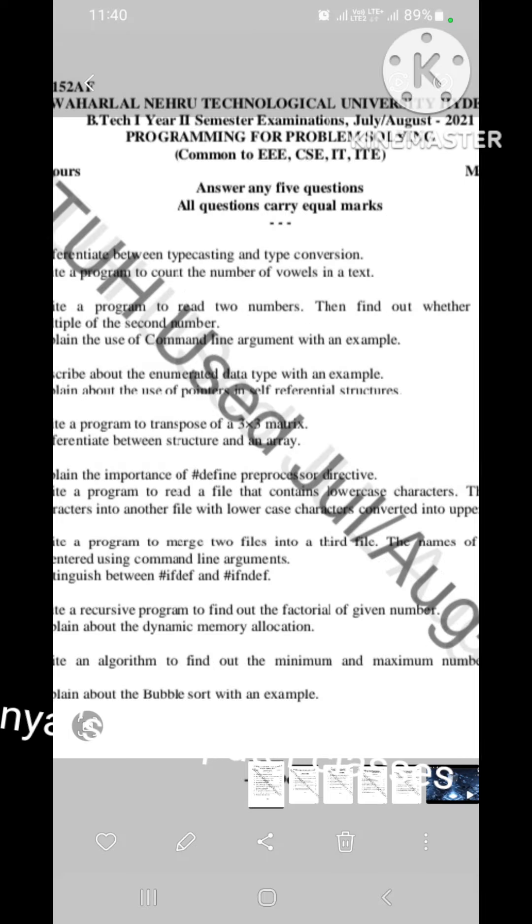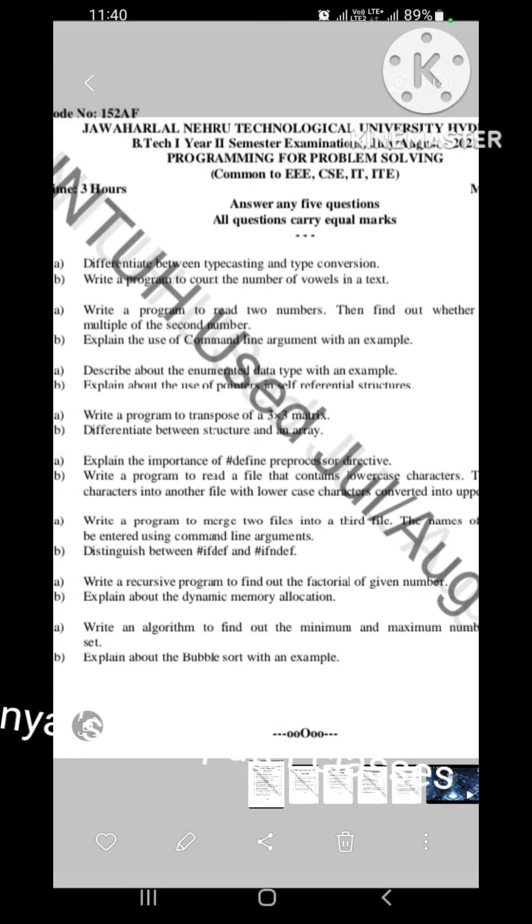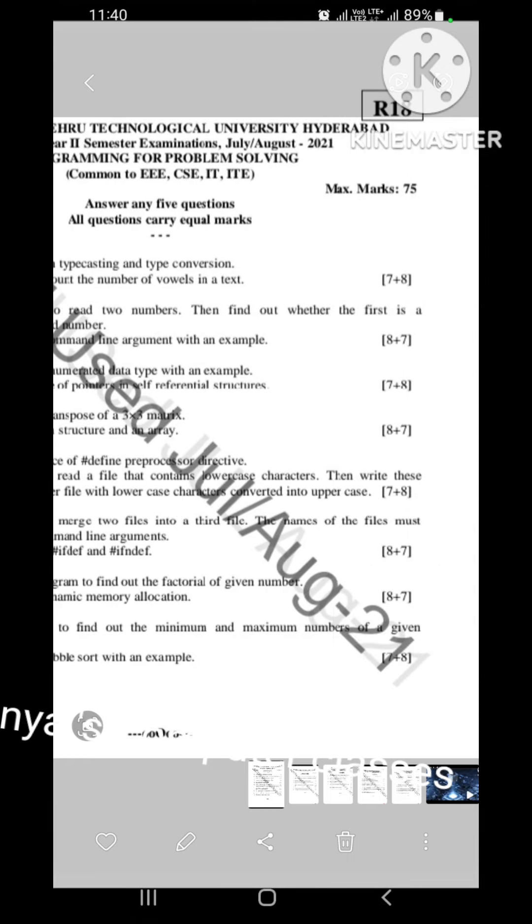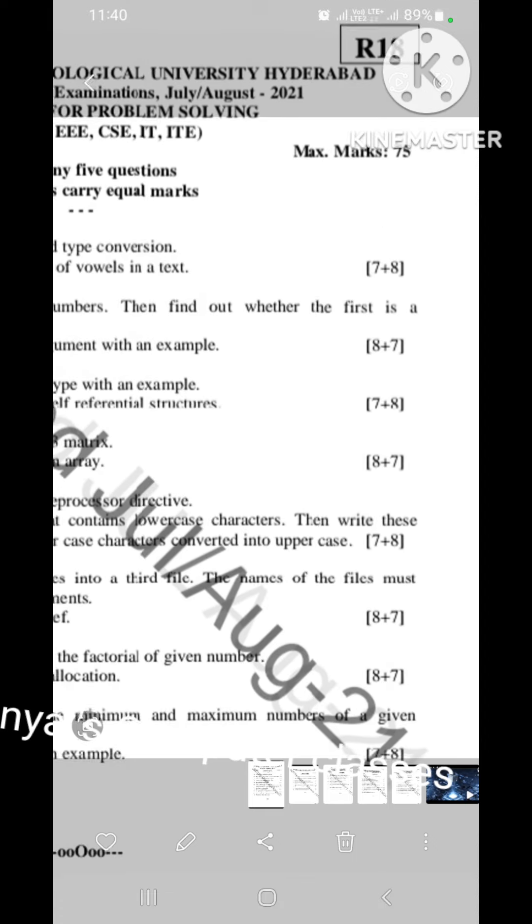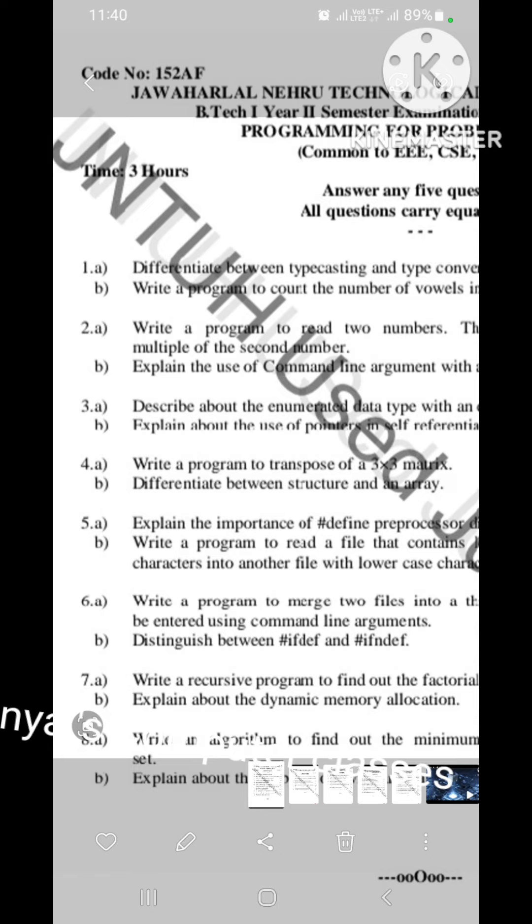First one is, this is the COVID pattern question. Out of 8 questions, we just answer any 5 questions. 5 into 15 marks, that is 75 marks. So, first question. First question is from unit 1.